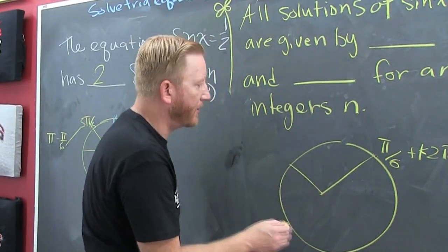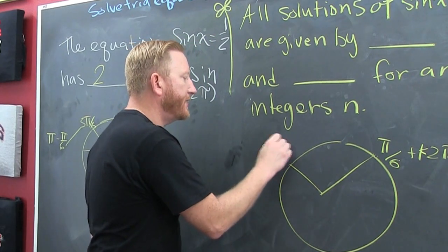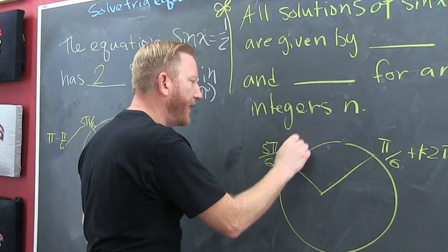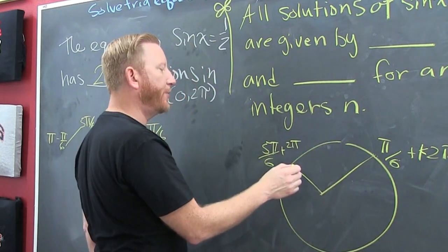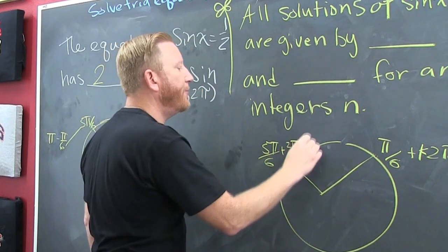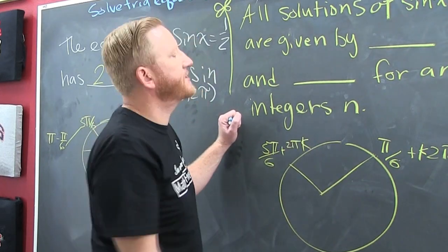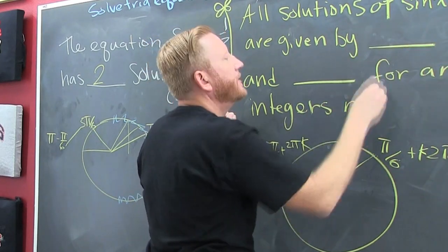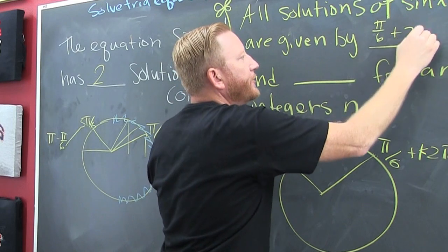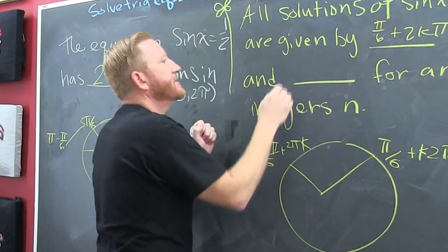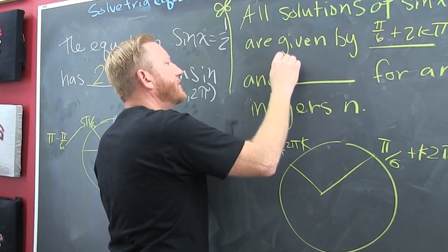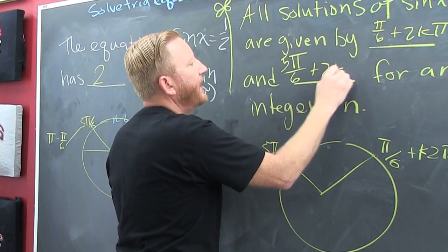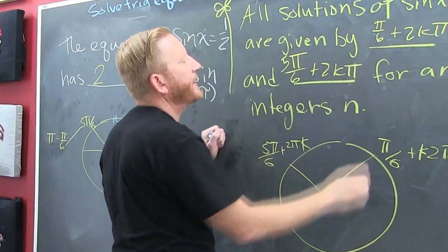So that's not the only place. It's also over here. Five pi over six, and all the way around, full circle. That's two pi. All the way around again, that's four pi. All the way around. So all the solutions are pi over six plus two k pi. And five pi over six plus two k pi.